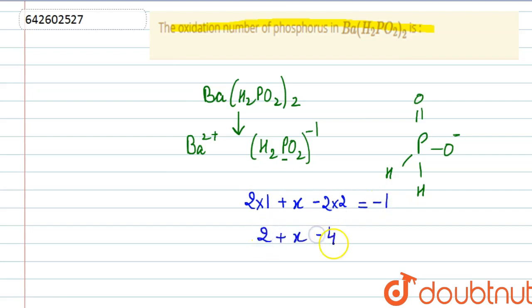2 + x - 4 = -1. x - 2 = -1. x = -1 + 2, that is equal to +1.